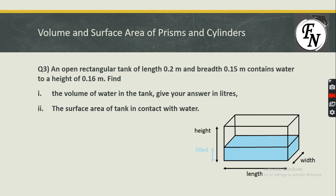The first question: an open rectangular tank of length 0.2 meters and breadth 0.15 meters contains water to a height of 0.16 meters. We have the height at which water is filled, but not the height of the cuboid itself. When liquid is filled in a rectangular tank, it takes the shape of the container — the length and width of the water match the tank, but the height varies with the water level. We need to calculate the volume of water and the surface area in contact with the cuboid.